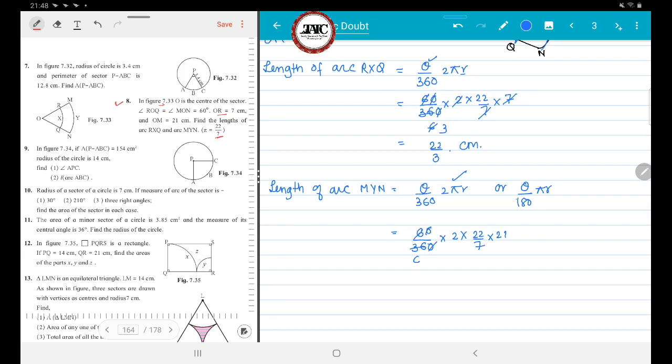6, 6 will get cancelled, 2 becomes 3, 3 becomes 7, and 7 will get cancelled. So your answer is 22 centimeters.